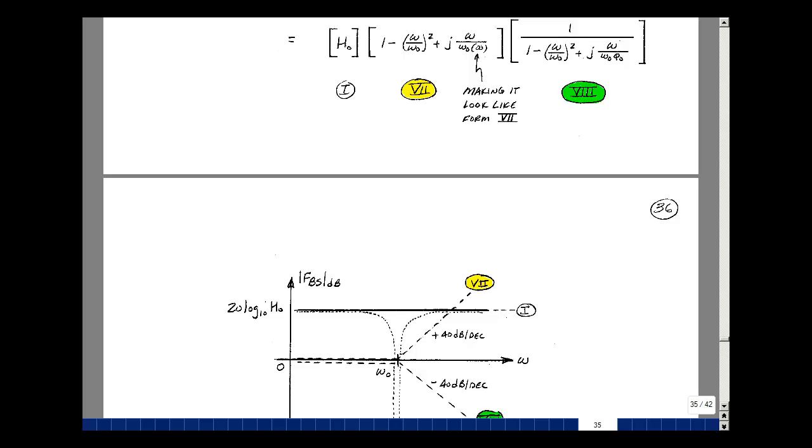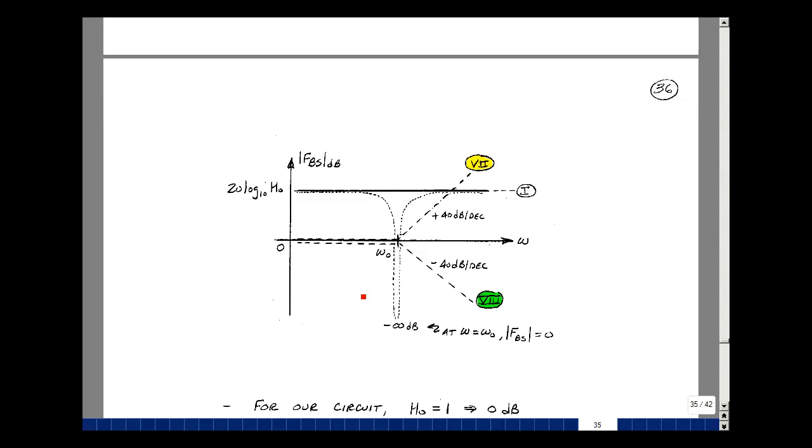For the form 8, same thing, except that we change the slope to be a minus 40 dB per decade.